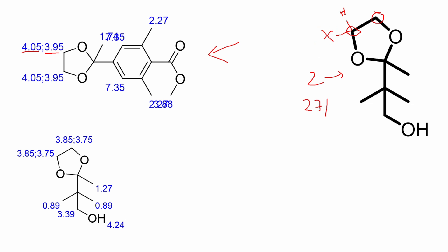After replacing one hydrogen with element X, this carbon becomes a chiral center. Now we have one chiral center. Normally, one chiral center would mean the protons are enantiotopic — giving enantiomers. But in this particular case, by substituting just one hydrogen, this other center, which was earlier not chiral, also becomes chiral in nature.